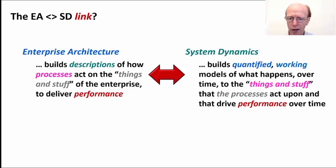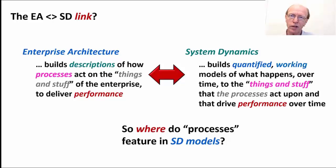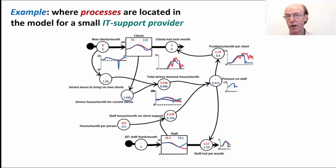So that's how the two seem to be connected. Where do business processes actually feature in system dynamics models? Well, here's a very simple case that we use for illustrating various things in the strategy dynamics field. It concerns a small and simple IT service provider providing IT services for small and medium enterprises in a region. The performance concern is what's happening to those clients at the top there. You can see that over a 36 month period, the number of clients grew strongly early on and has since been declining. The worry is on the red line that the numbers of clients are going to carry on going down.